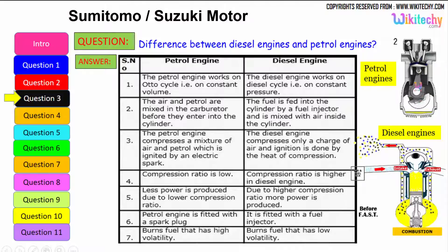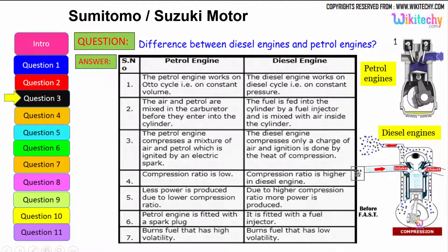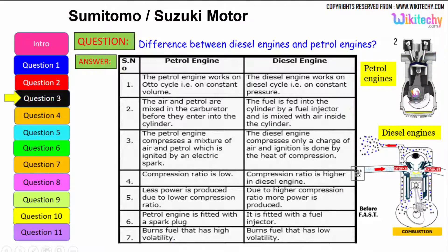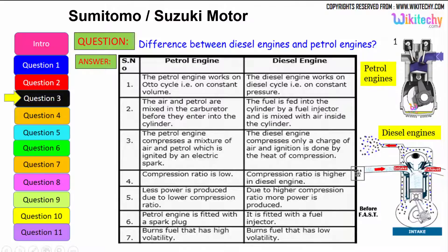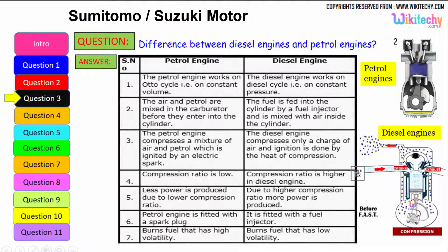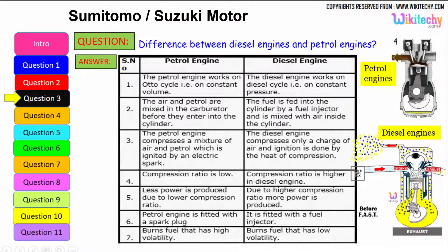A petrol engine is fitted with a spark plug, whereas a diesel engine is fitted with a fuel injector. A petrol engine burns fuel with high volatility — petrol is highly volatile. Whereas a diesel engine burns low-volatility liquid — diesel is a low-volatile liquid.